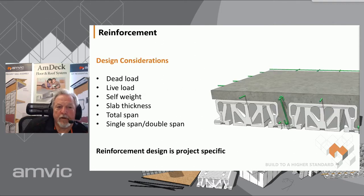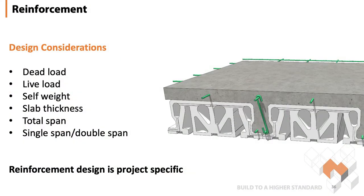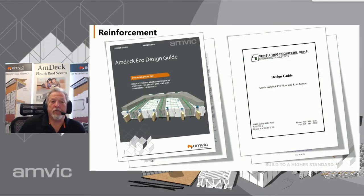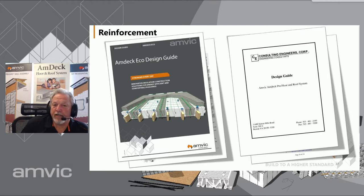Let's look at reinforcement requirements. A few things to be aware of: dead loads, live loads, the self-weight of the system (which includes the thickness of the slab, concrete joists, and the span). Having a single or double span will also impact the AMDEC reinforcement. The final design will be project-specific and approved by an engineer. We provide design guides for both Pro and Eco versions on our website under the technical resources tab. These are a good starting point for estimating and preliminary drawings; however, once a project reaches a more mature stage, the structural engineer would review and either approve the proposed reinforcement or make adjustments based on site requirements.